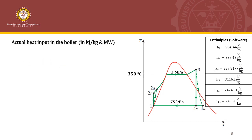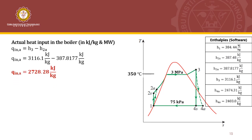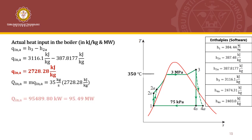For the actual heat input in the boiler, the exit is at H3 and the inlet is at H2A. Plugging in the values of H3 and H2A gives the actual heat input per unit mass. Multiplying by the mass flow rate, the actual power input in the boiler is 95.49 megawatt.